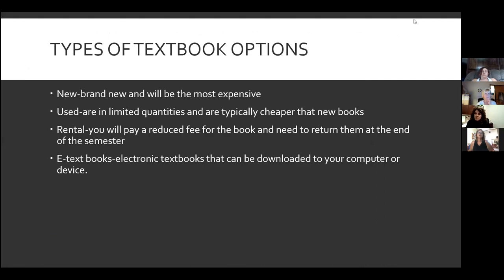So you'll have lots of choices as we saw going through the bookstore website. You'll be able to choose a new book, which is brand new — usually always available but the most expensive option. There aren't always used textbooks available for each class. If publishers change the edition, there sometimes aren't used books, which makes things more expensive. Used books are books that other students have used and the bookstore bought back — typically cheaper but in limited quantities.